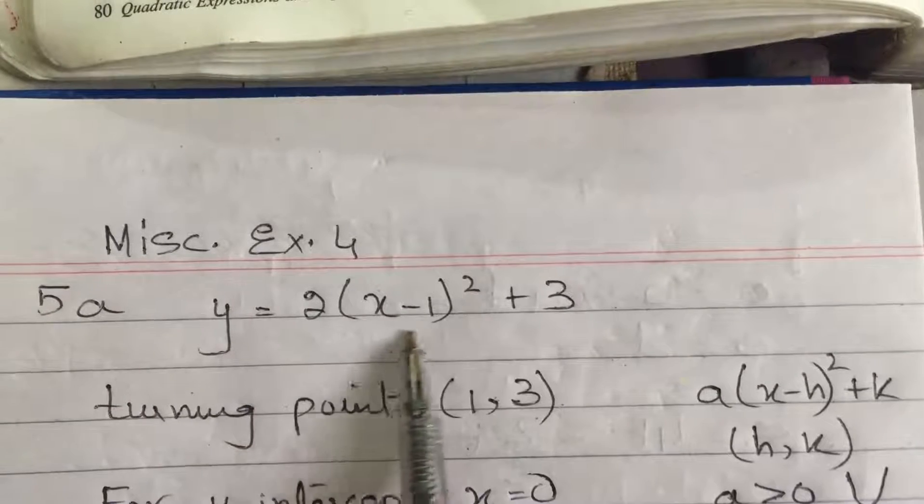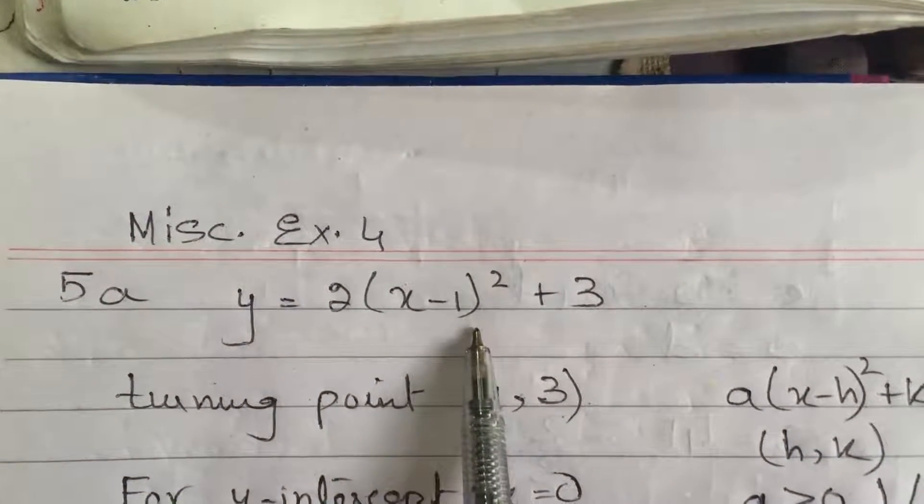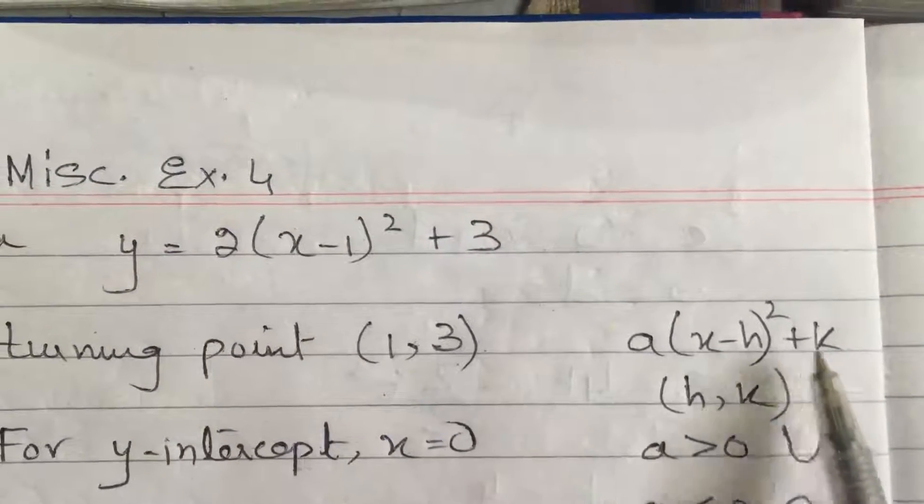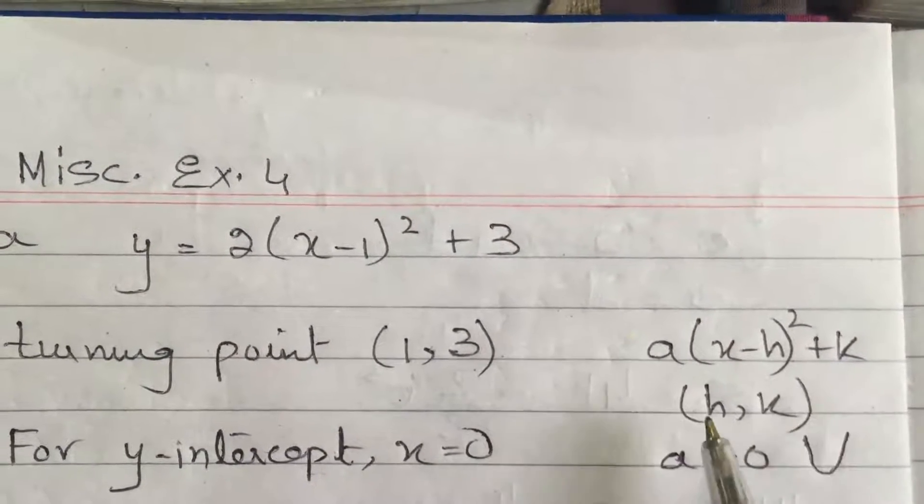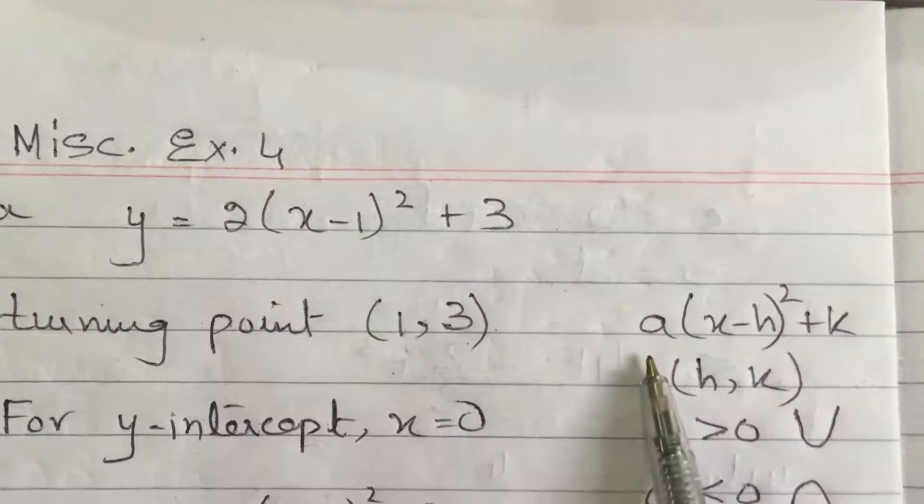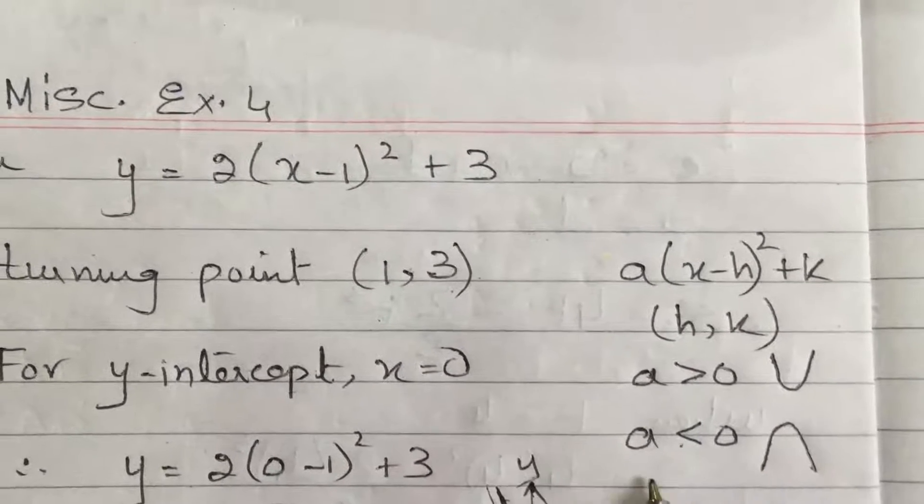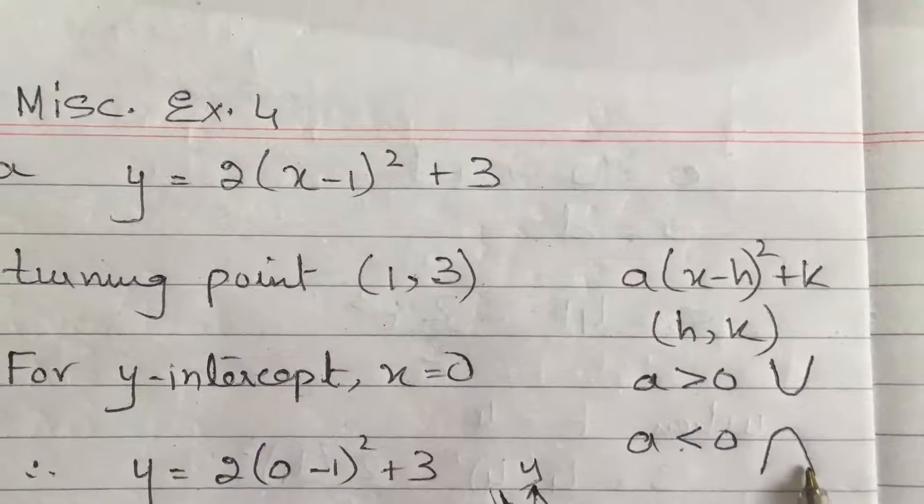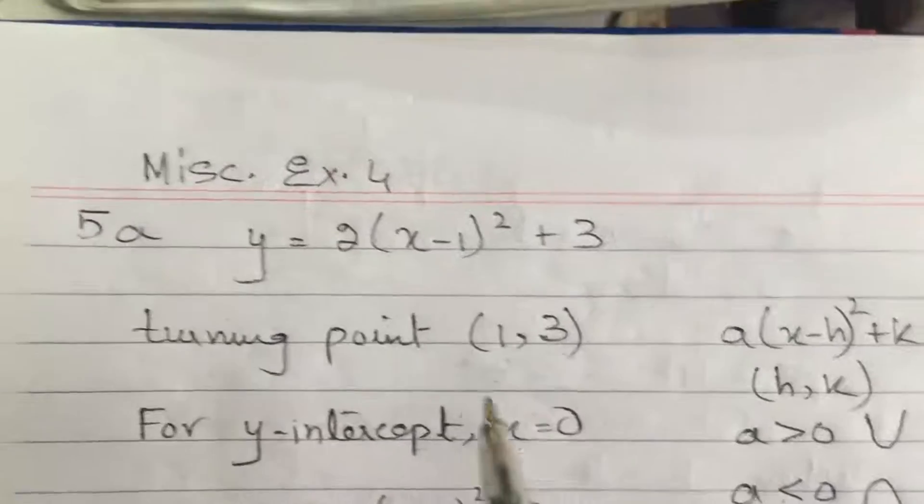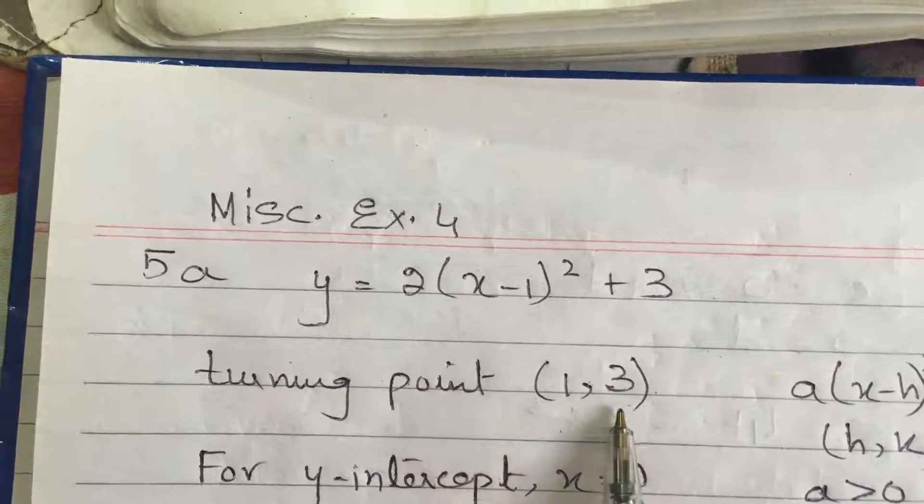Now the equation of the curve is given to us, and we know this is a completing square form. If we relate it with the general completing square form, we know that h,k gives us the turning point. We know if a is positive, we get minimum value curve. If a is negative, we get maximum value curve. So from this equation of the curve, we know that the turning point is at 1, 3.